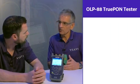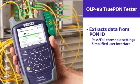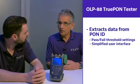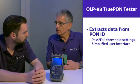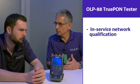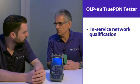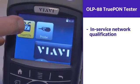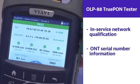The OLP-88 is a true PON tester — it's more than a pure PON power meter. For the first time, we're using a new G-PON data analysis that provides the functionality to extract information about the PON system from the PON ID, providing auto pass/fail threshold settings and a simplified user interface. On top of that, the PON ID enables in-service loss testing — the first time you're able to do an in-service optical distribution network qualification. The G-PON data analysis also provides the serial number of the ONT, which is very valuable for operations.